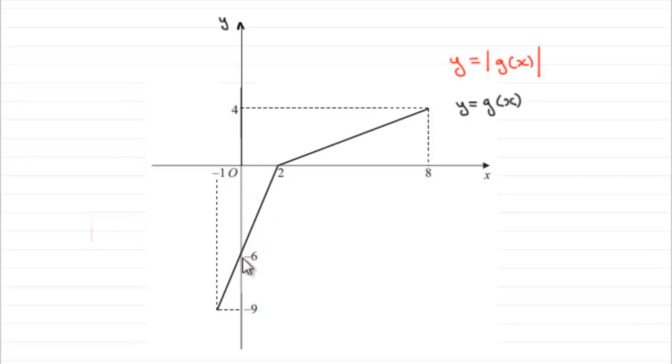So instead of dropping down to minus 6 here, minus 6 gets mirrored up to a point up here. So that point would be 6.